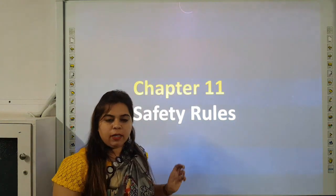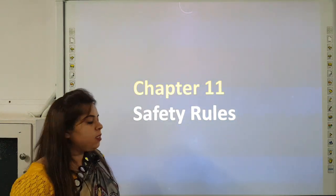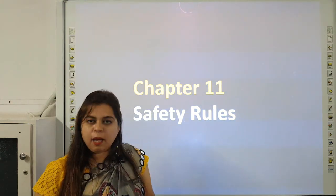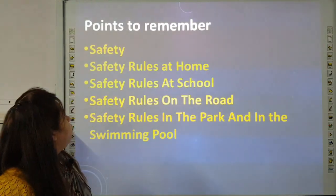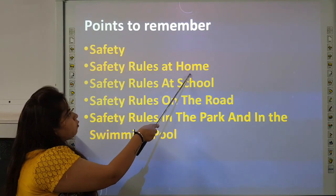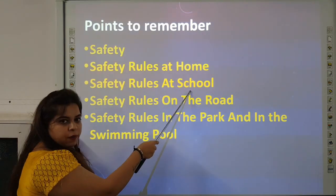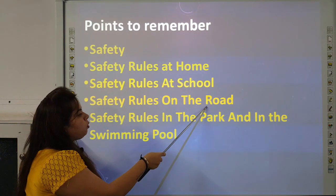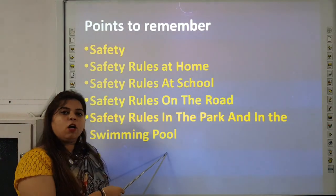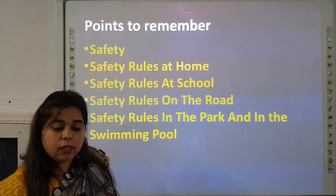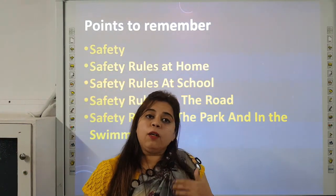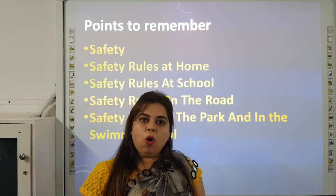Now we will revise chapter number 11, Safety Rules. In this chapter we are going to revise what is safety, how to be safe at home, at school, on the road, in the park and swimming pool. Protecting oneself from any harm is called safety.